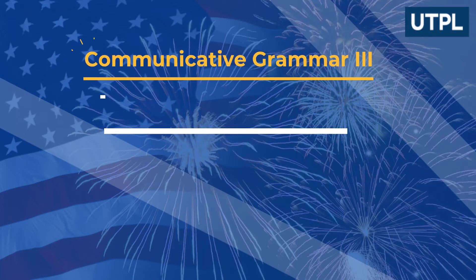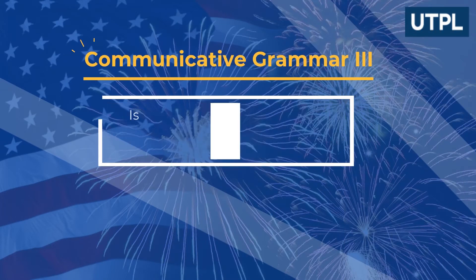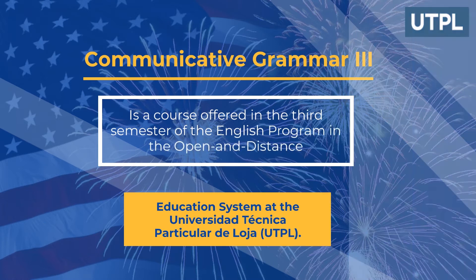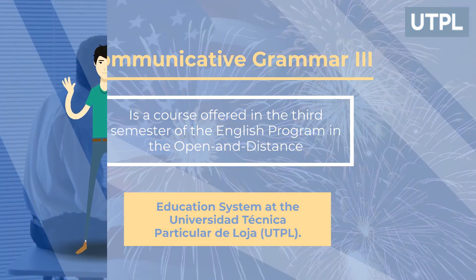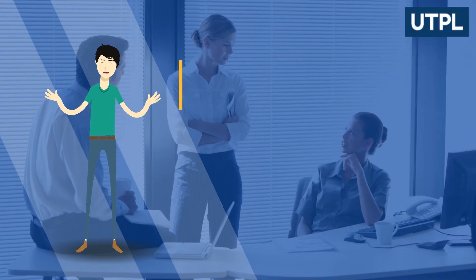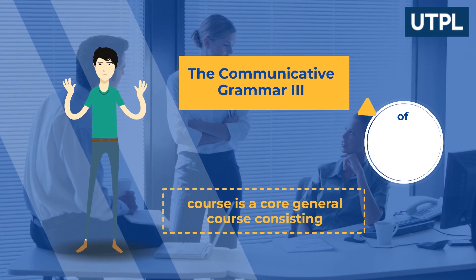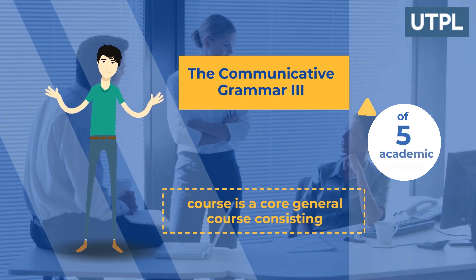Communicative Grammar 3 is a course offered in the third semester of the English program in the Open and Distance Education System at the Universidad Tecnica Particular de Loja. The Communicative Grammar 3 course is a core general course consisting of five academic credits.